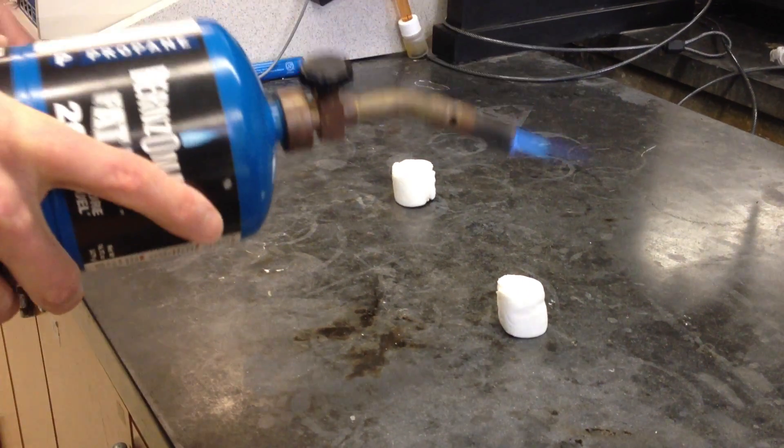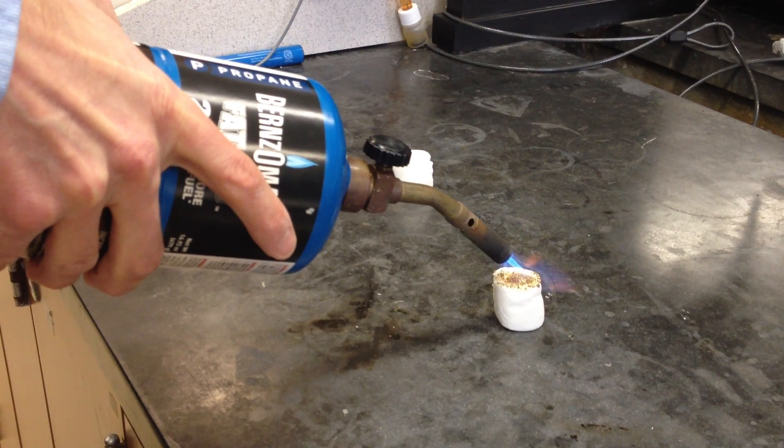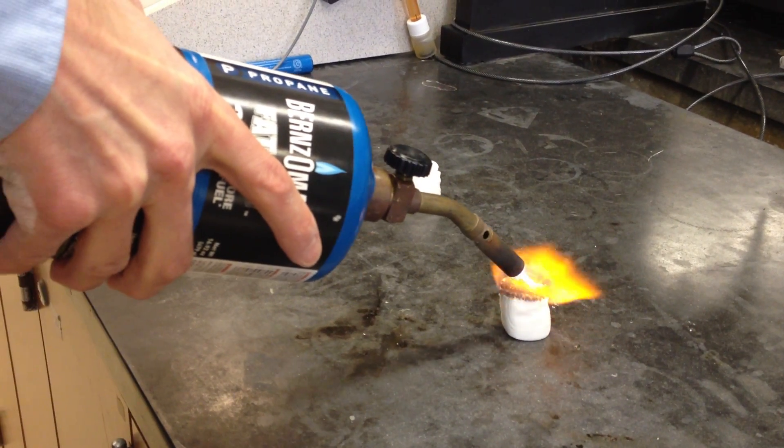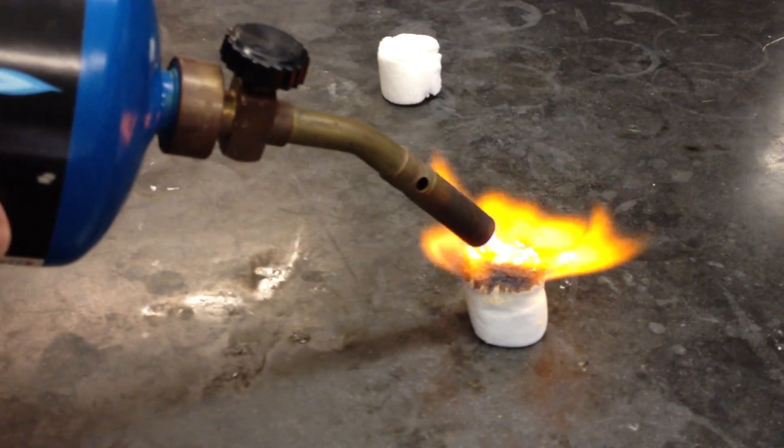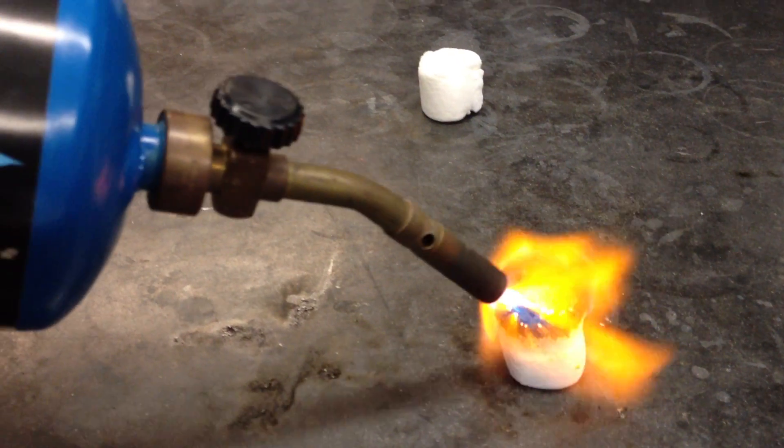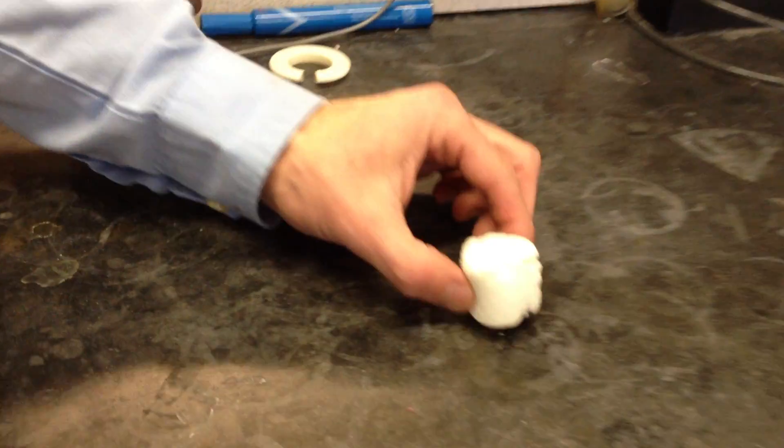All right, this marshmallow here we're going to heat so that it glows. You can see there's spots on there that are glowing. I'm going to make sure that happens. All right, now this marshmallow over here I'm going to try